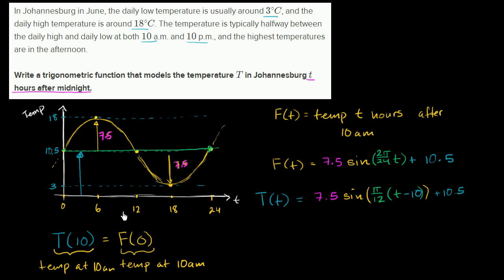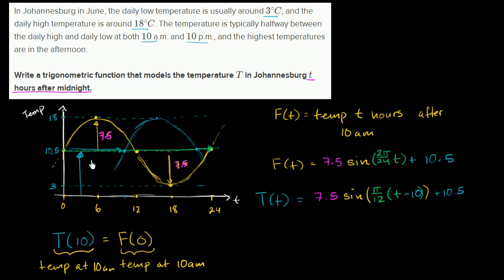Let's graph capital T. T of 10 is at the midline around here — the same as f of 0. We've essentially shifted everything to the right by 10. That makes sense: 0 hours after 10 a.m. corresponds to 10 hours after midnight, so the curve shifts right by 10. The high point moves to 16 hours after midnight — that's 4 p.m. — and the curve keeps oscillating. We replaced t with t minus 10 to accomplish this shift.